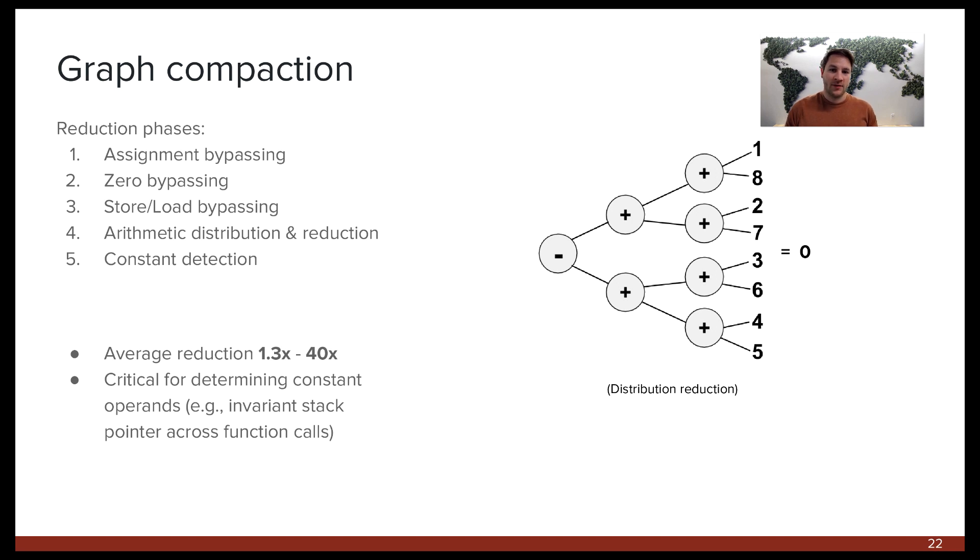There are many other reduction steps that can help us see the underlying patterns. One example is distribution, where, for example, we might find that a register is constant because it changes by a net sum of zero in the data flow graph. The key thing to remember here is that while these reduction steps can be complicated, they are necessary to avoid pessimistically classifying miss addresses as overly complex. In our tests, the average graph compaction factor ranged from 1.3x for small workloads to 40x for large complex workloads. The maximum compression ratio can be as high as millions. Now, let's move to the workload evaluation section.